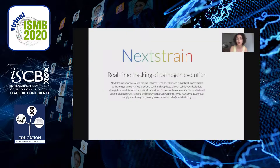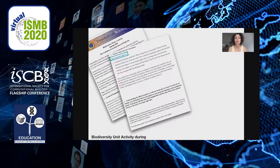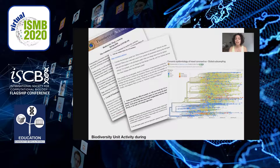Then we wanted our students to navigate to a website called Nextstrain. This is a real-time tracking database of pathogen evolution. It is open source and it is very cool — if you have not checked it yet, please do so. We wanted our students to go to that website in groups of four or five students in Zoom breakout rooms. We gave them a shared Google document, which is the activity worksheet, and they worked on this worksheet together by following the questions. As they discussed the answers, they understood how phylogenetic trees are created: what does a node mean, what does a branch mean, and when does branching happen?